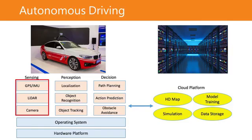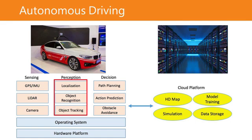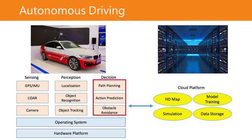For sensing, we have different sensors — for example, GPS, IMU (inertial measurement unit), and LiDAR, the laser range camera. We use these sensors to collect information. For perception, we have localization — how do you find out exactly where the car is at any moment — object recognition, and object tracking: if you've detected someone in front of the car, how do you predict their next action? Then the decision pipeline: how do you plan the path from point A to point B — for example, from Mountain View to Irvine? And action prediction: as you're driving on the highway, how do you predict the behavior of neighboring cars to avoid accidents? Finally, obstacle avoidance: if you detect something in front of you, how do you maneuver your car to go around the obstacle? All these are the algorithms.